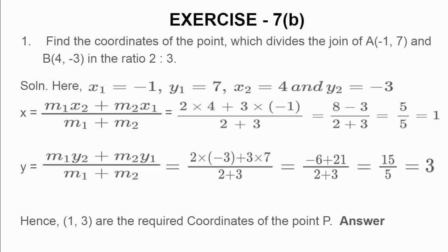Similarly, y equal to, the formula is m1 y2 plus m2 y1 divided by m1 plus m2. You put the value of m1, y2, m2, y1. The value of m1 is 2, multiply y2 is how much? Minus 3 plus m2 is how much? 3 into y1, y1 is 7 divided by 2 plus 3. So, how much you will get? Minus 6 plus 21 divided by 2 plus 3, so 15 upon 5 equal to 3.